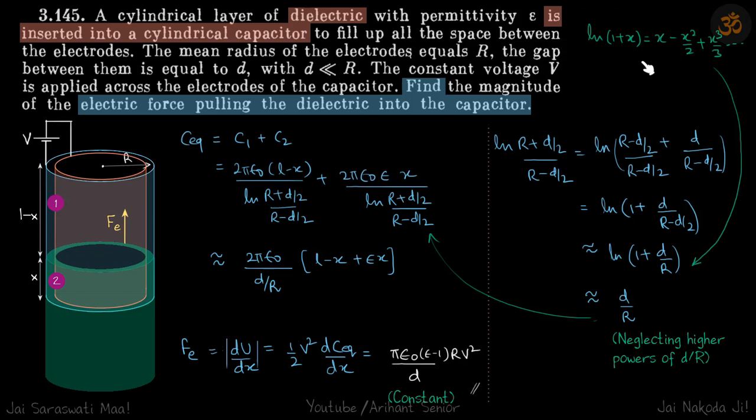Now we'll use an approximation because D is much less than R. We can write the LN form, and since R is much greater, we can approximate it to ln(1 + D/R).